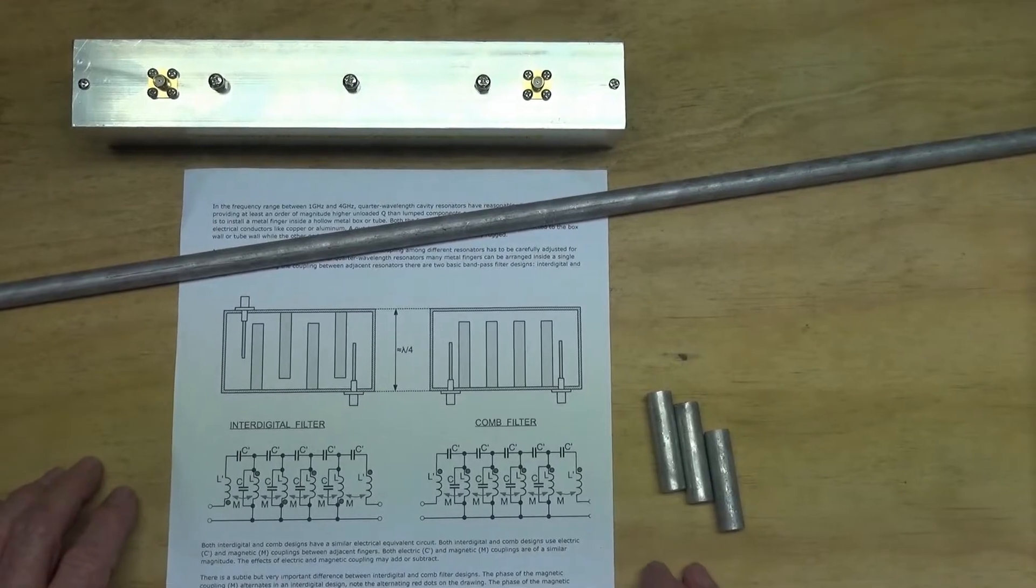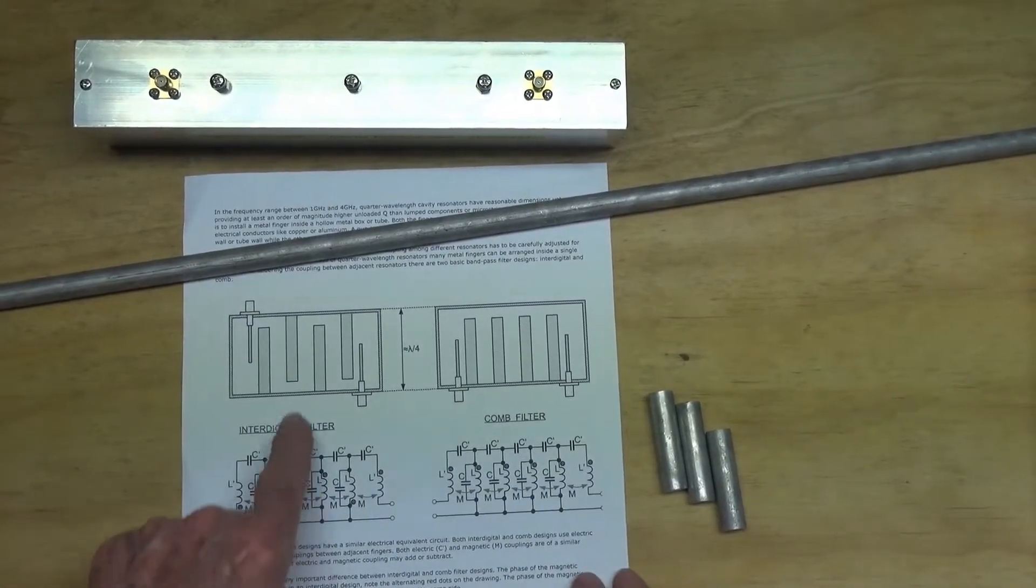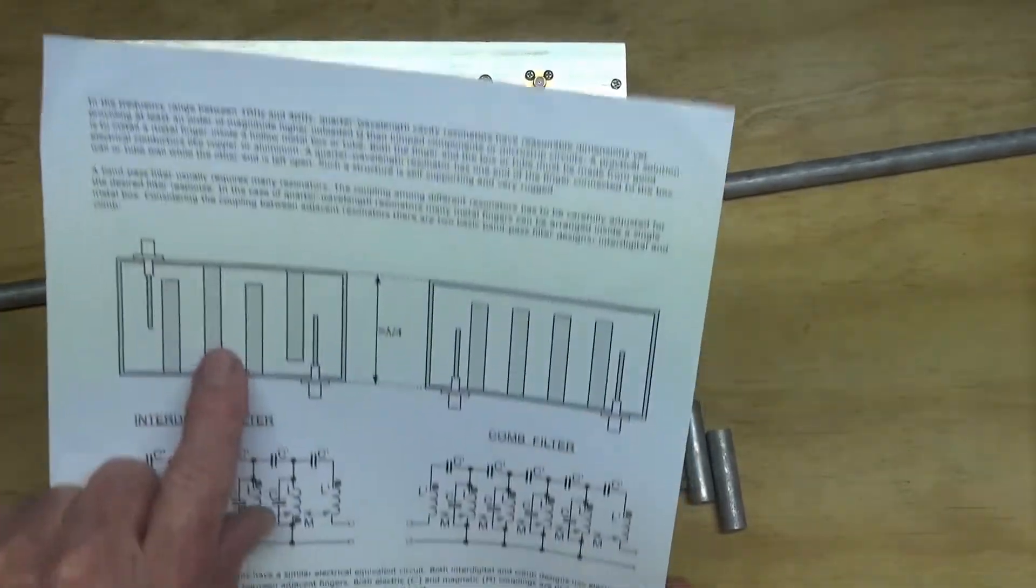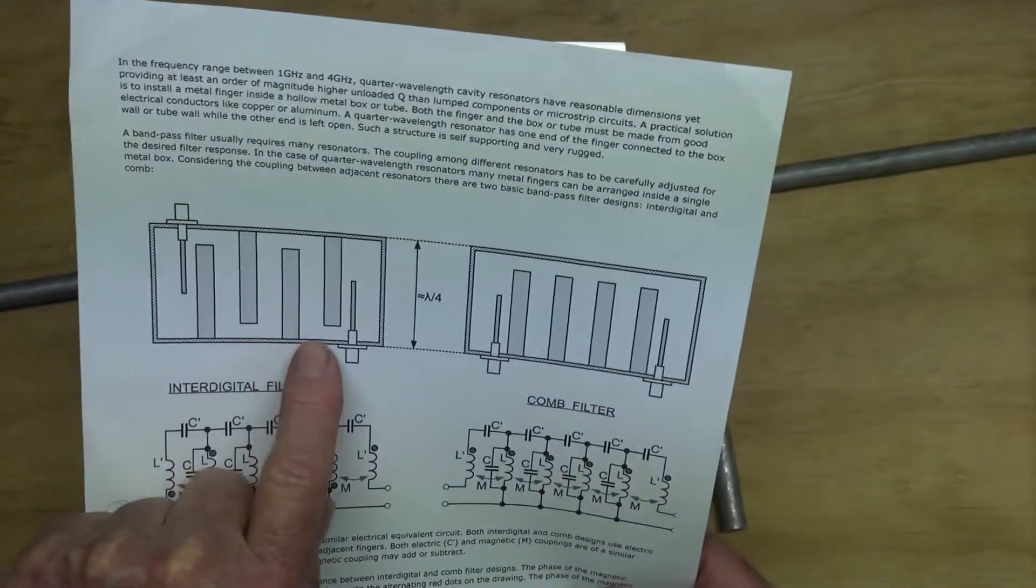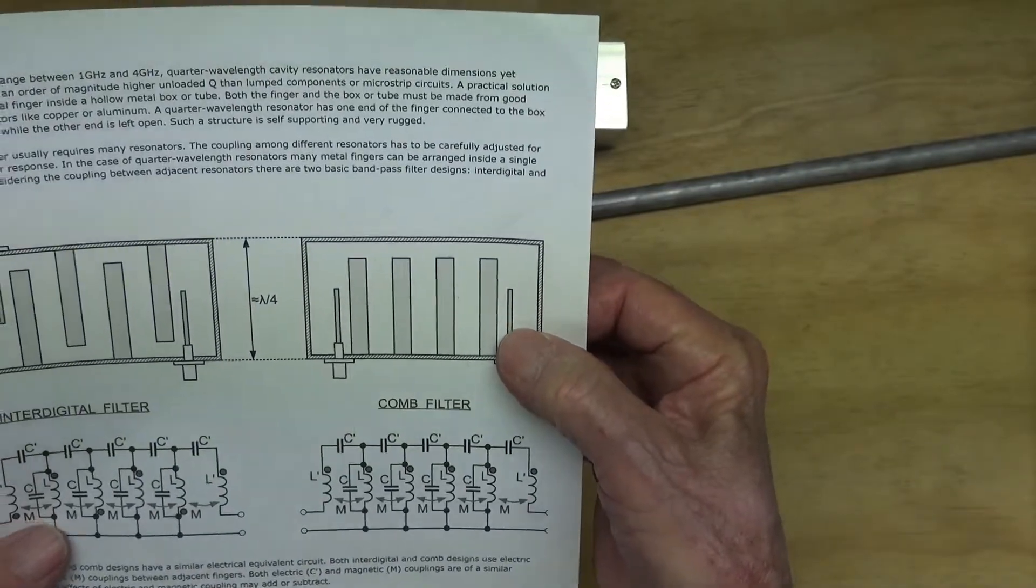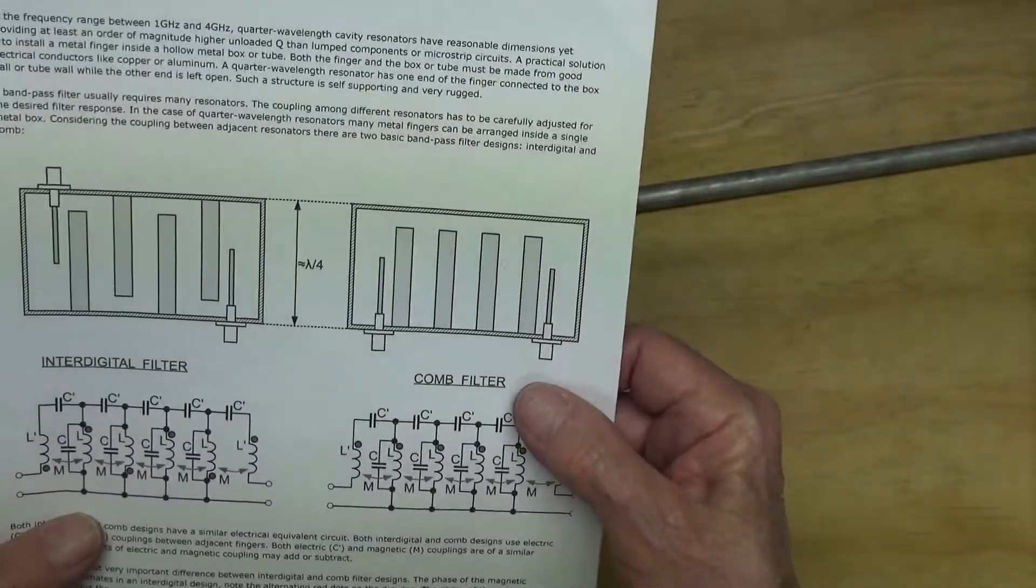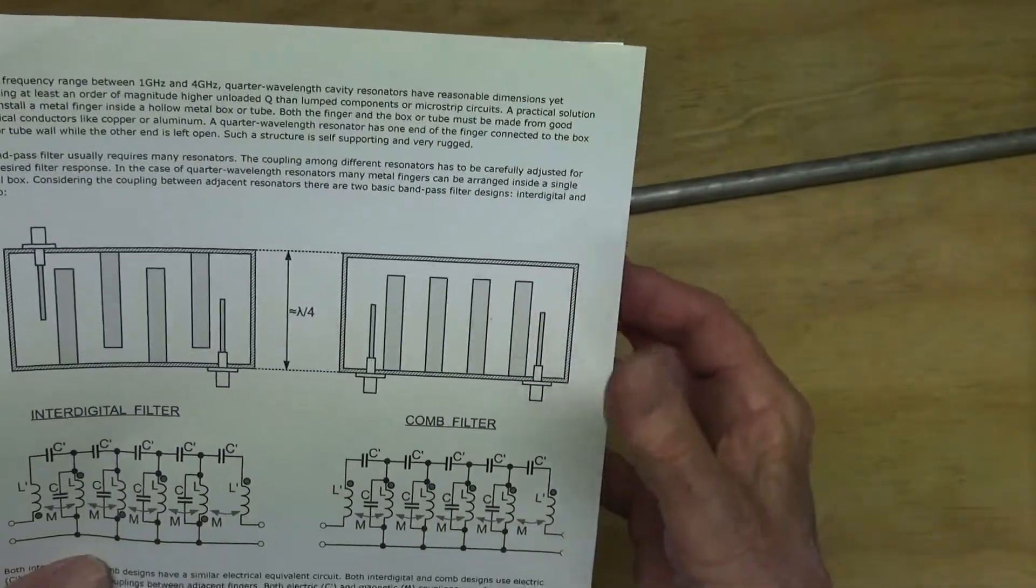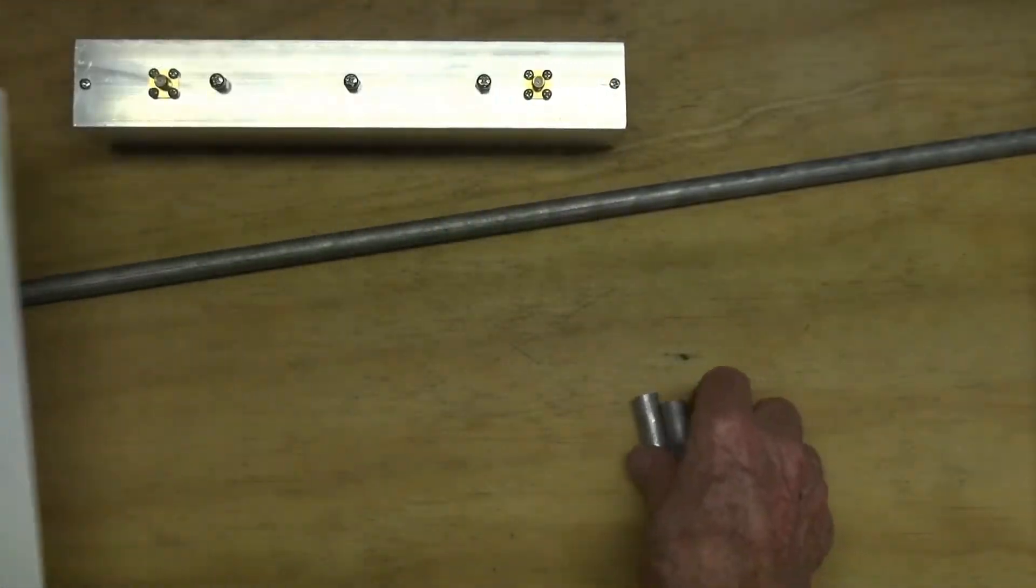There's basically two ways to build bandpass filters. There's the inter-digital design, which has alternate fingers each side of the case, and the other is the comb style filter. The comb has a number of advantages, so that's the design we're going to use here.